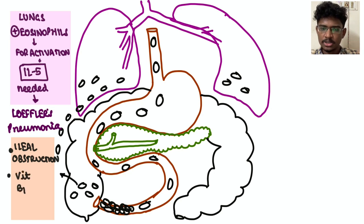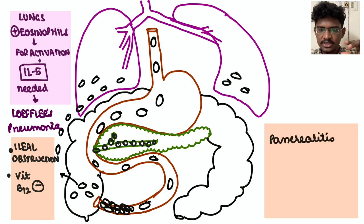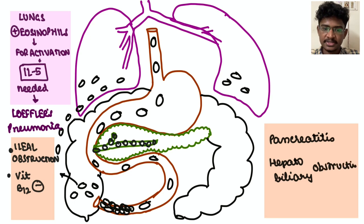And ileum is a site where B12 is absorbed, so B12 deficiency will happen. Next, these worms can migrate and block the ducts, pancreatic ducts, resulting in acute pancreatitis. Can block the hepatobiliary ducts, resulting in bile ducts being blocked, obstructive jaundice. All these are possible with ascariasis.